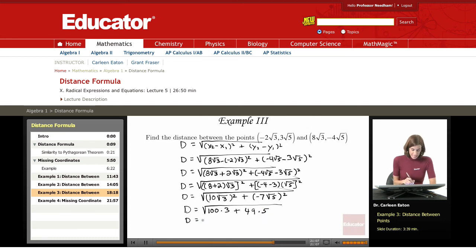So now it's getting much cleaner looking than we started out with. 100 times 3 is 300, plus 49 times 5 is actually 245.